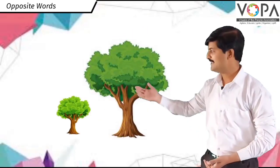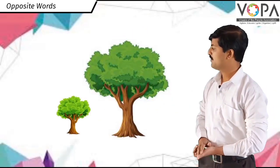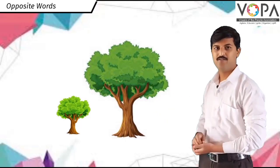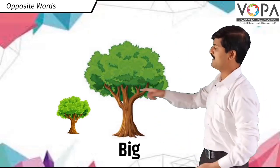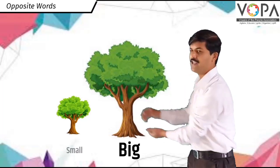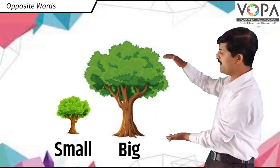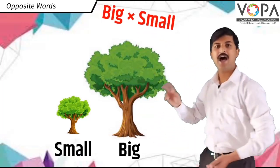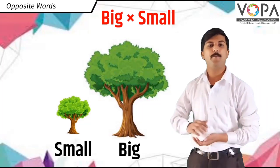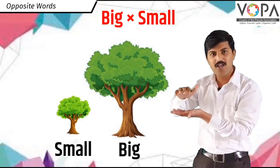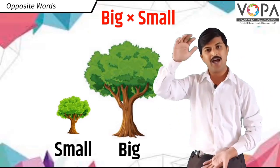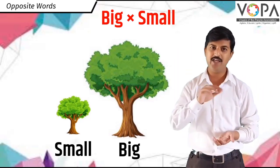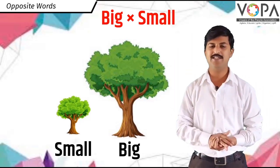Let's take another example. See these two pictures. There are two trees. One tree is a big tree and the second tree is a small tree. Big and small are two opposite words. In Marathi: motha ani chota — he duni ulat artha che shabda ahet.